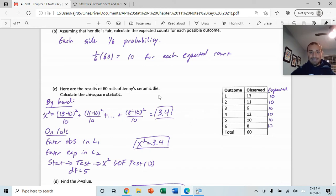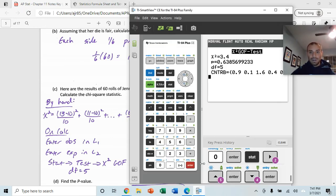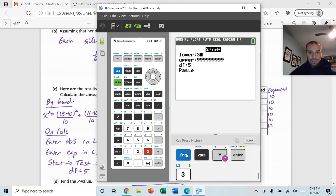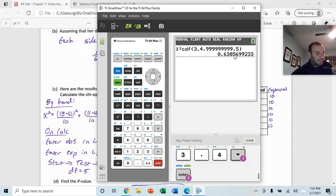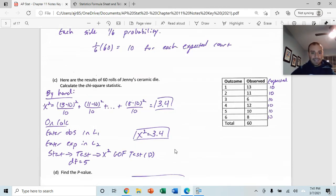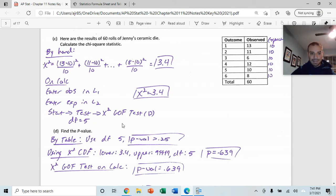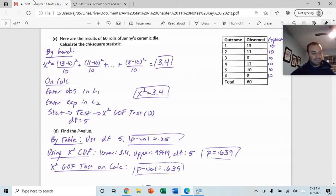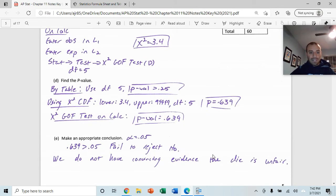If I did it all by hand and they gave me this test statistic of 3.4, if I go to 2nd and VARS and then chi-squared CDF, and I put in 3.4, and then I can put a huge number because I'm looking for the area above that. Degrees of freedom is 5. Hit paste. You'll get that same p-value. So, we're copying down the test statistic and the p-value. Notice I get the same thing by the table. If I went to degrees of freedom of 5, notice that 3.4 is not on the table. All I would know is that it's greater than 0.25. So, p-value is 0.639.